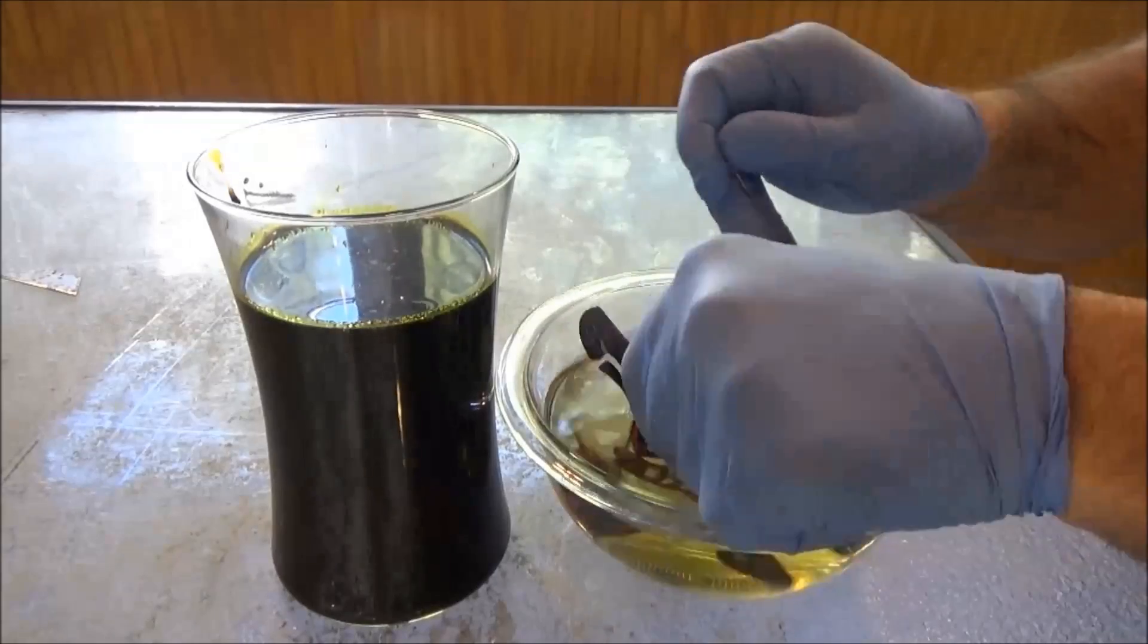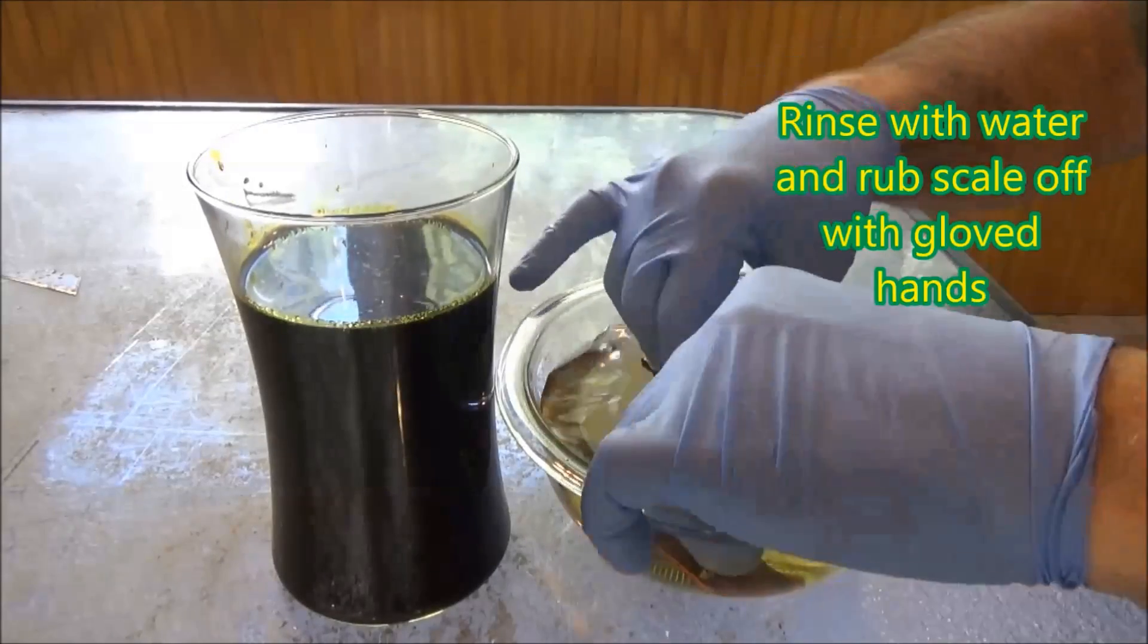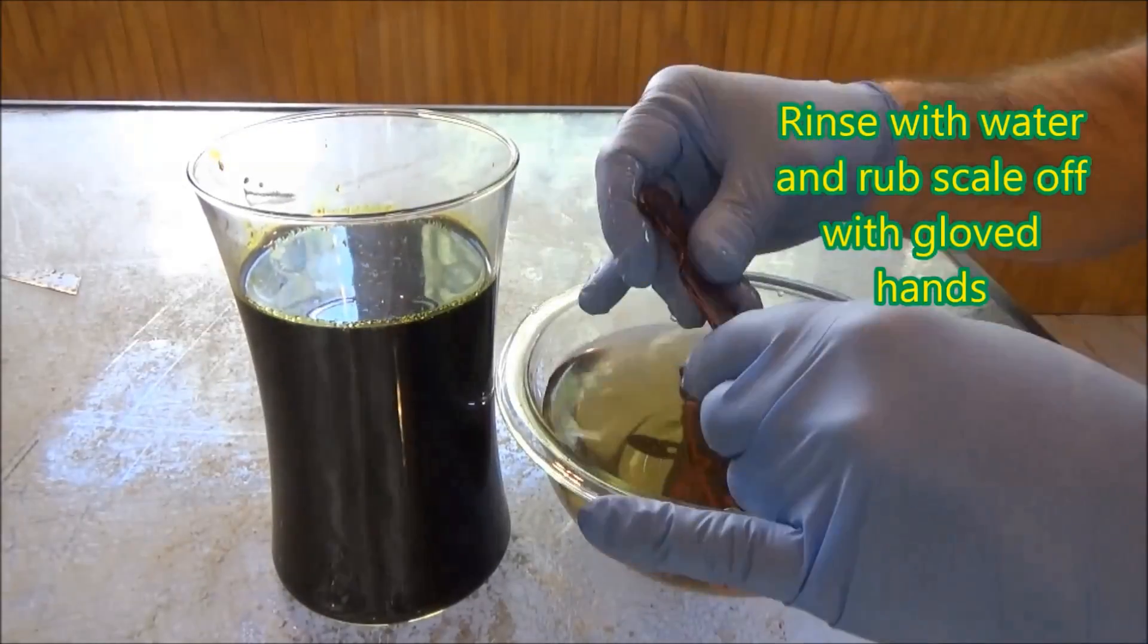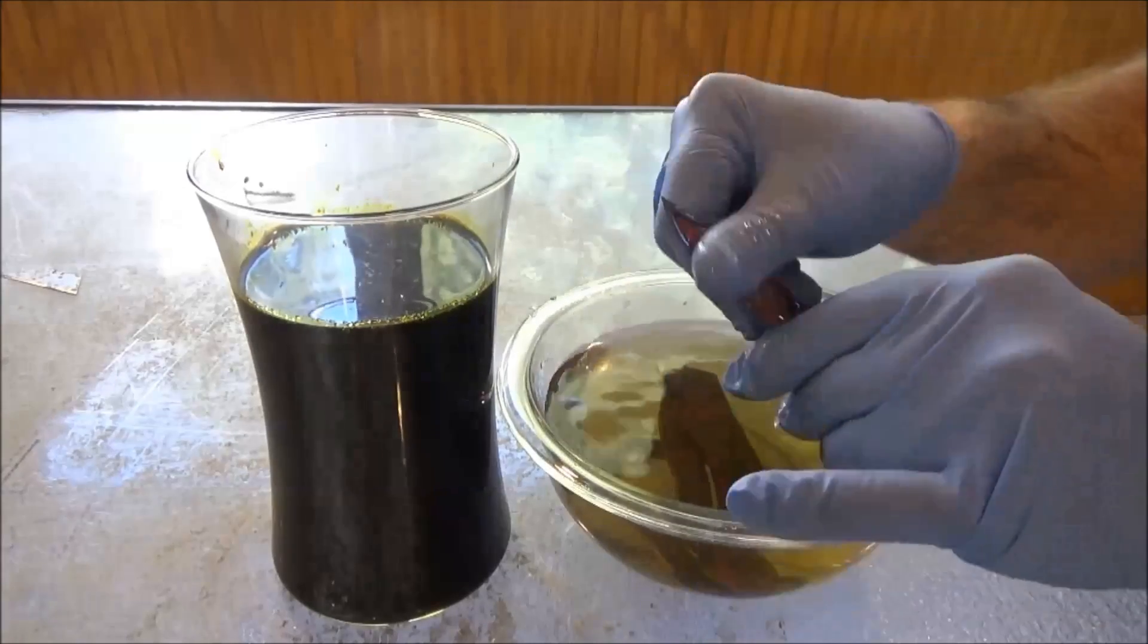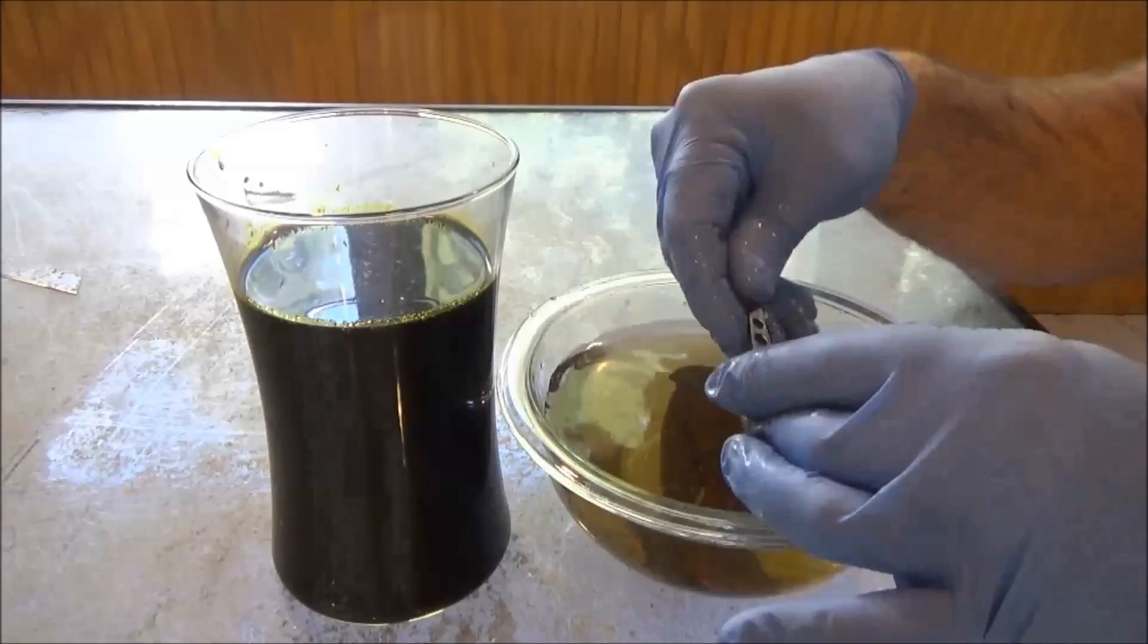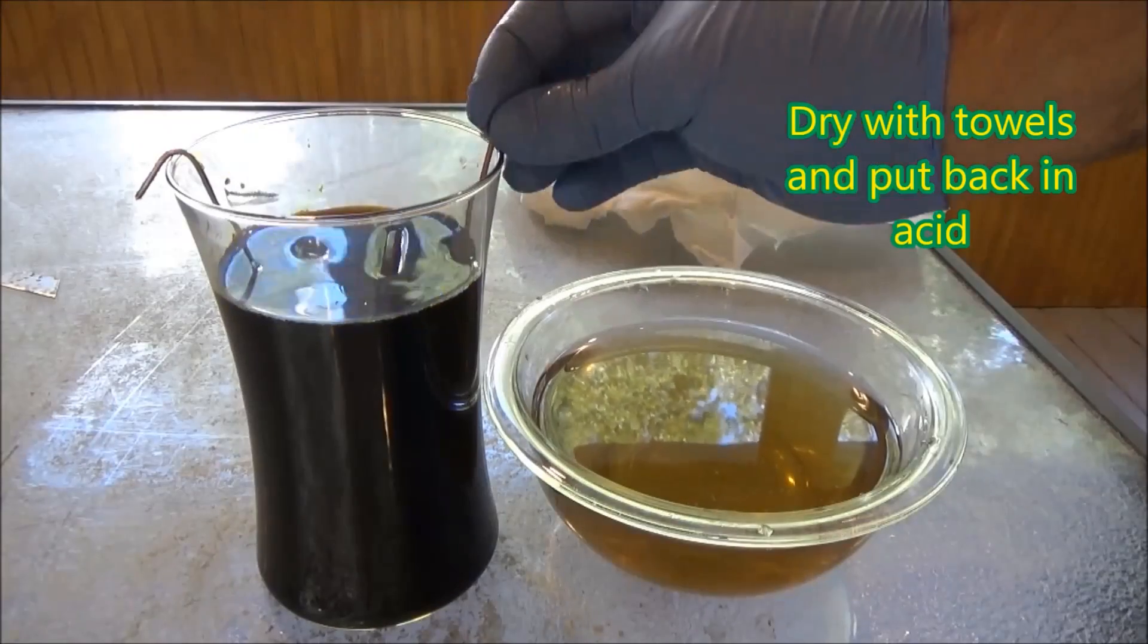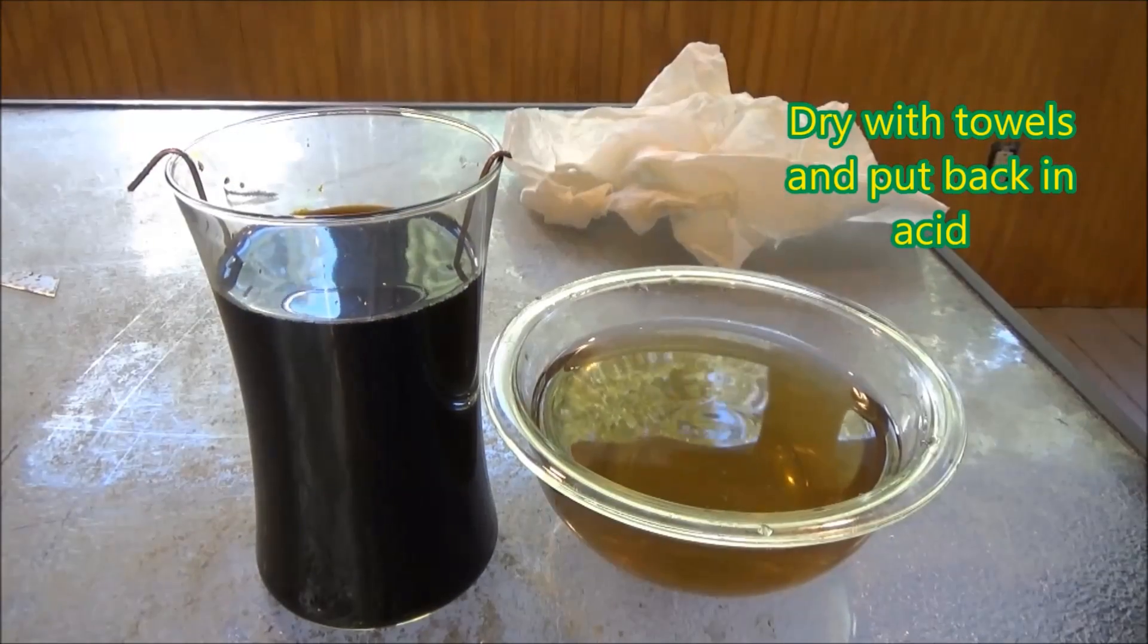I have submerged the parts in the ferric acid for about 20 minutes, in which case I take the parts out, wash them off with water, and then rub off the scale with my rubber gloves on.